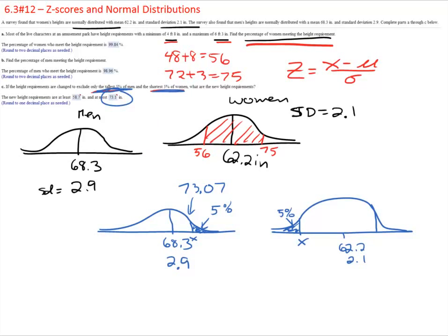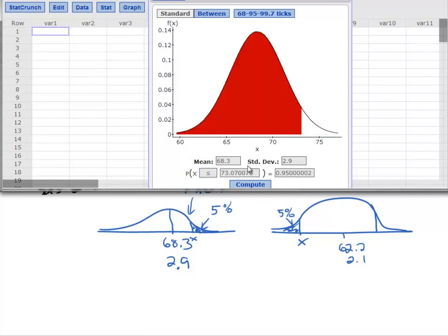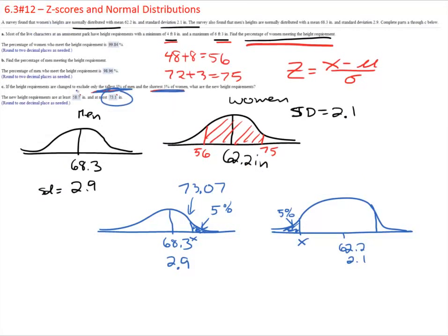Now let's try the women. We have to change it to less than. We also have to change the distribution. It's now 62.2 is the mean. 2.1 is the standard deviation. And we now want to know the probability that x is less than 5%. There is my picture. It matches my picture. Less than 5%. And that is a cutoff of 58 point, looks like it would round to one decimal, would be 58.7. And 58.7.